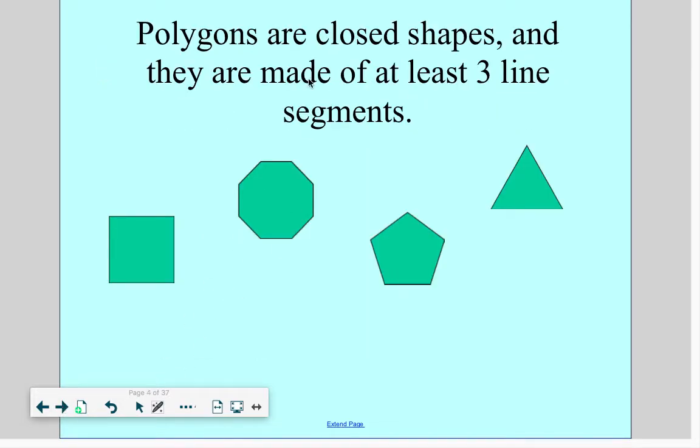In addition to that, polygons are what we call closed shapes. When you look at all four of these shapes, none of these shapes have openings or gaps in them. They're also made up of at least three line segments. Notice all their sides are straight line segments. They have a beginning and an end. These shapes can't have any curves in them.